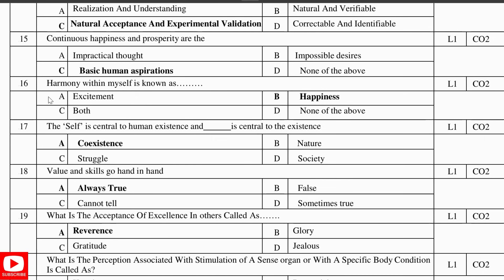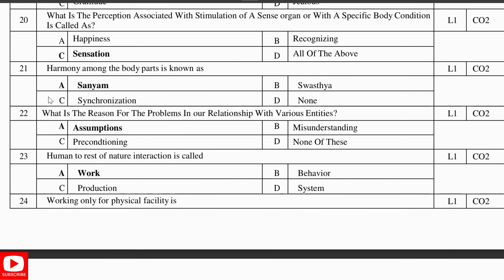Continuous happiness and prosperity are the basic human aspirations. Harmony within myself is known as happiness. The self is central to human existence and coexistence is central to the existence. The value and skills go hand in hand — always true. What is the acceptance of excellence in others called? Answer: Reverence. What is the perception associated with the stimulation of a sense organ or with a specific body condition called? Answer: Sensation.